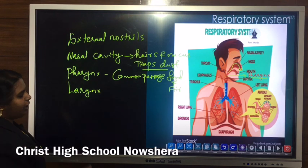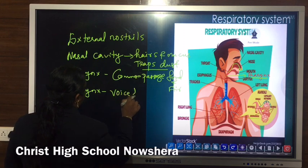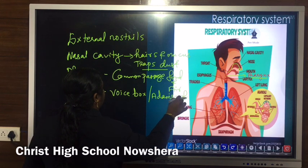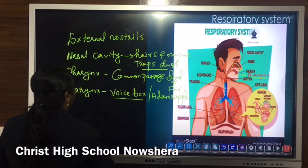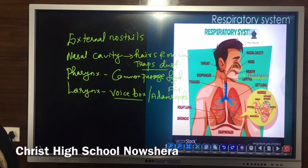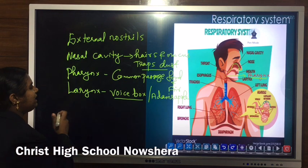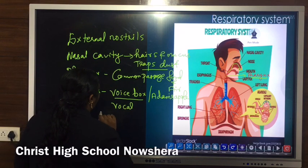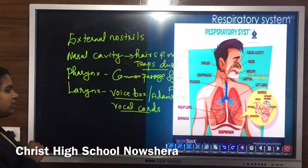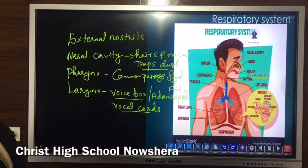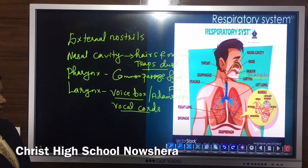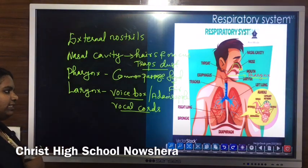The pharynx leads to another smaller tubular structure known as the larynx. Another name for larynx is voice box or Adam's apple. The main function of larynx is the production of sound. It contains small vocal cords, and when air passes down through these vocal cords, it produces sound. That is why larynx is known as the voice box.